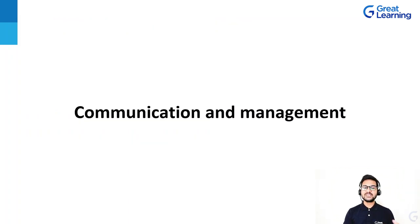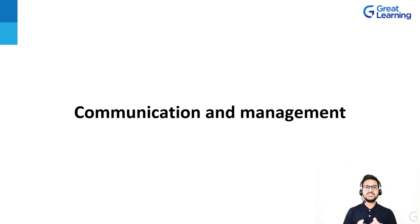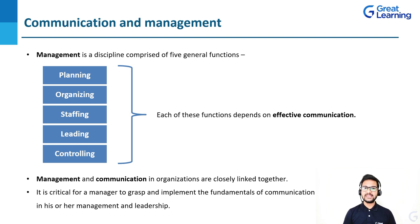Since this entire course is about communication management, before we start with what exactly is communication management and how to manage communication at a project or organizational level, it is important for us to understand what exactly is the relationship between communication and management. Communication is a different term; management is a different term. How are these two terms interconnected? As you can see on the screen, management is a discipline comprised of five general functions: planning, organizing, staffing, leading, and controlling.